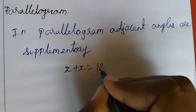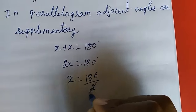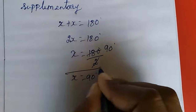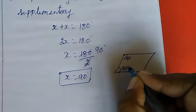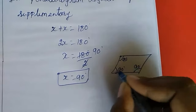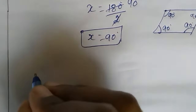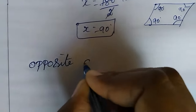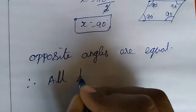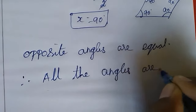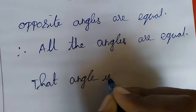So x plus x equals 180 degrees, which gives 2x equals 180 degrees. Therefore x equals 180 divided by 2, which is 90 degrees. This is the parallelogram — the adjacent angles are each 90 degrees. Since opposite angles are equal, all four angles will be 90 degrees.